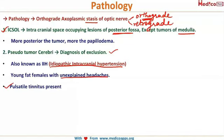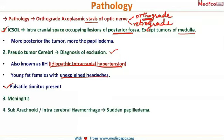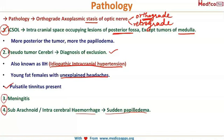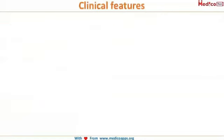Along with headache, a prominent feature of IIH is pulsatile tinnitus. The third cause of papilledema is meningitis — any infection. The fourth cause is subarachnoid or intracerebral hemorrhage. A differentiating feature here is that papilledema is of sudden, acute onset because hemorrhage is always sudden, causing a rapid rise in intracranial pressure.